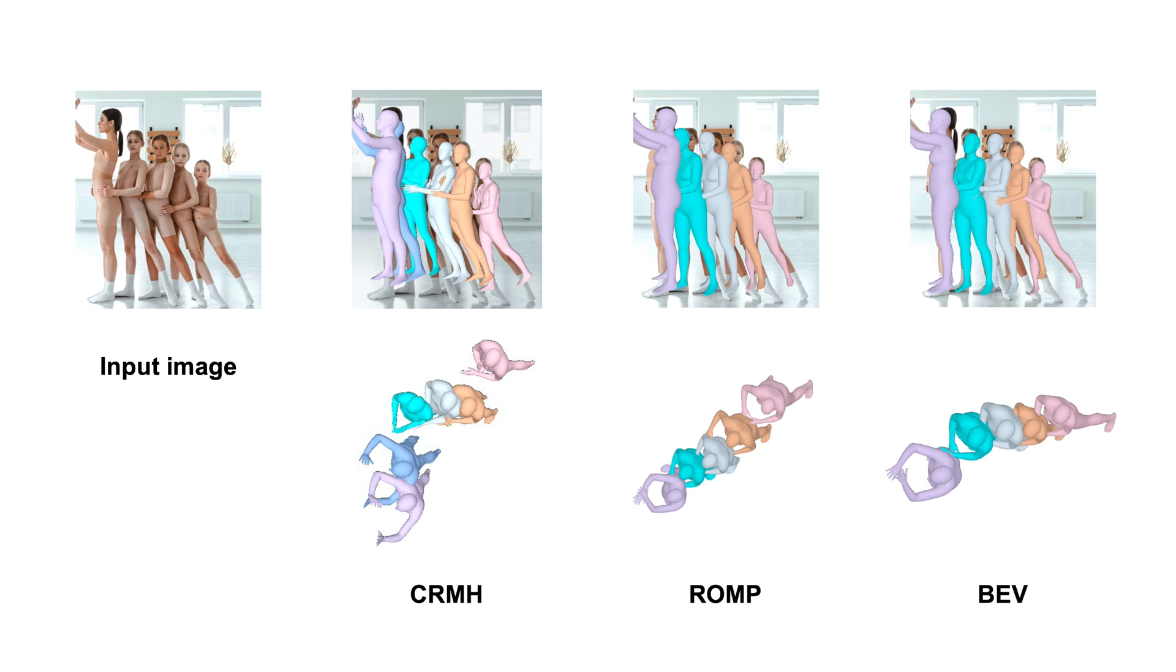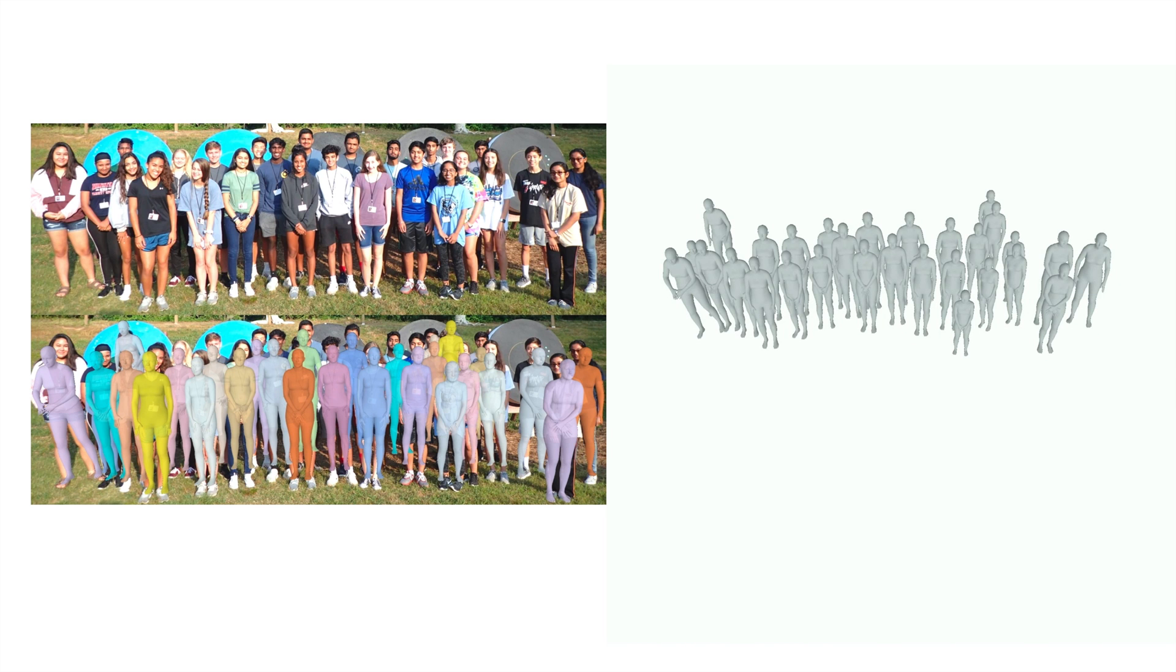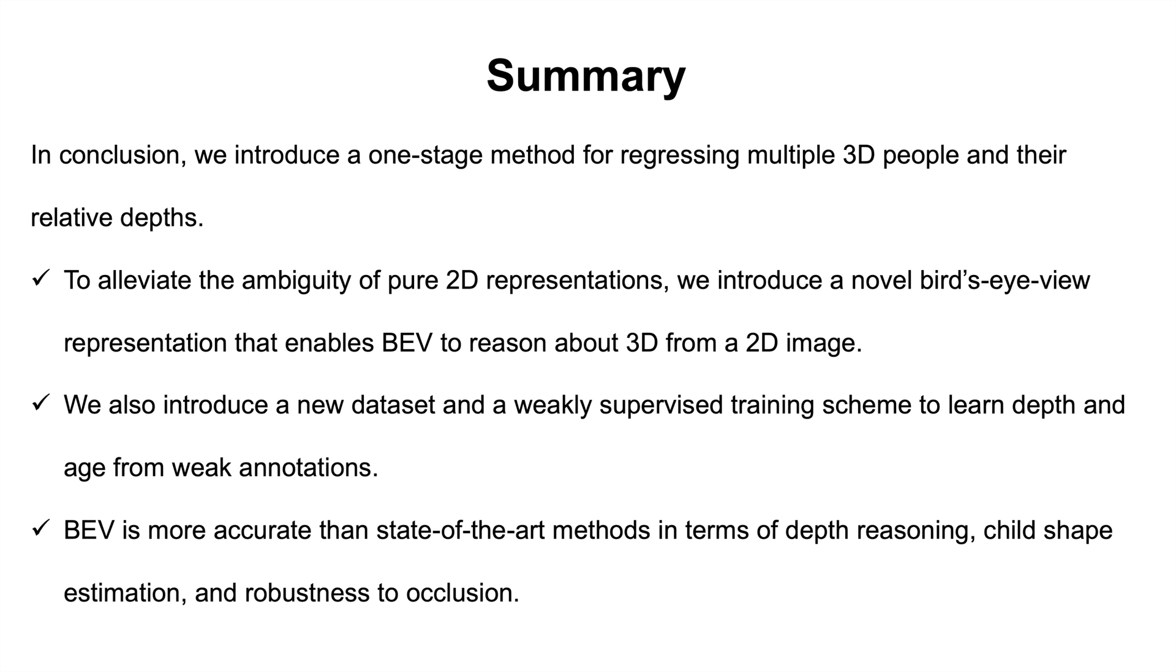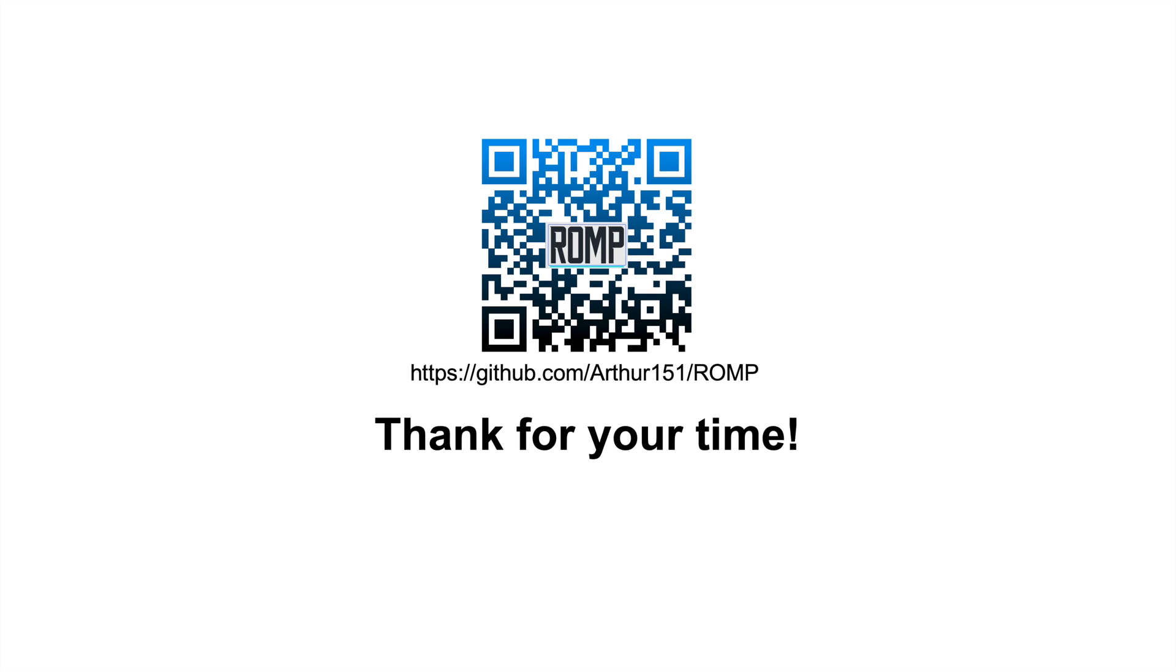In conclusion, we introduce a one-stage method for regressing multiple 3D people and their relative depths. To alleviate the ambiguity of pure 2D representations, we introduce a novel bird's-eye view representation that enables BEV to reason about 3D from a 2D image. We also introduce a new dataset and a weakly supervised training scheme to learn depth and age from weak annotations. BEV is more accurate than state-of-the-art methods in terms of depth reasoning, child-shape estimation, and robustness to occlusion. Thanks for your time.